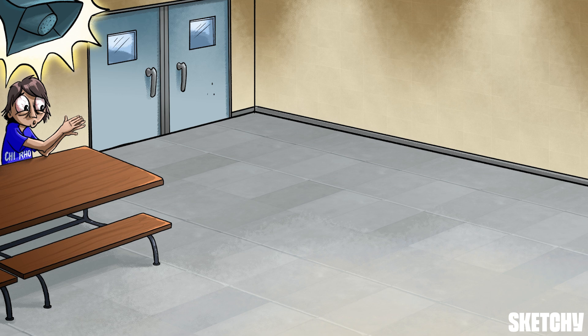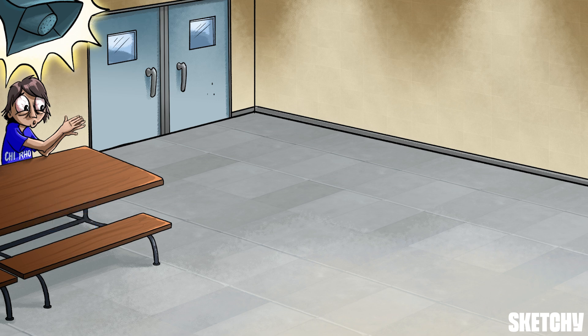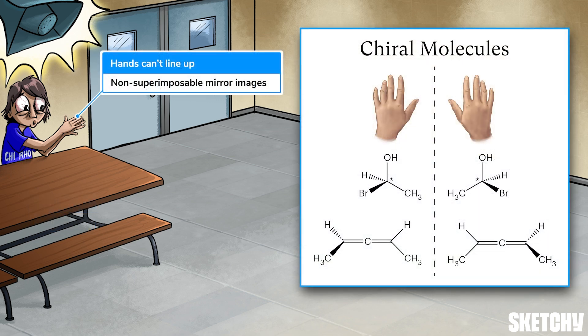This member of the Chiro fraternity is trying in vain to line up, or superimpose, his left and right hands on each other, to remind you of the concept of chirality. A chiral molecule is not superimposable on its mirror image, which means those mirror images will never line up perfectly on top of each other, no matter how you turn them — kinda like how this bro's left hand will never be superimposable on his right hand.